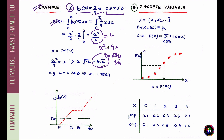So the inverse CDF is x = 3√u. To simulate, we use Excel's RAND function, which returns a uniformly distributed random value between 0 and 1. Suppose Excel returns u = 0.343 — pushing this into the formula gives x = 3√0.343 = 1.7569. Keep changing u, and each time you get a new simulated value of x. This concludes the inverse transform method for the continuous variable case.